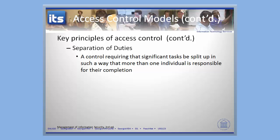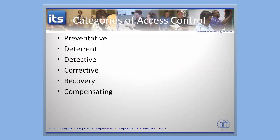I've talked about three key principles of access control: least privilege, need to know, and separation of duty. Now let's talk about some categories of access control.